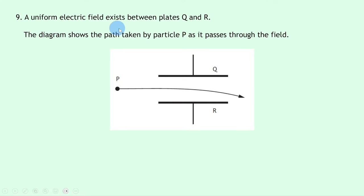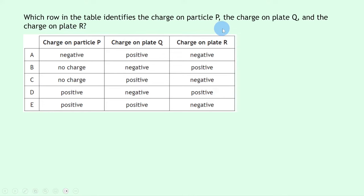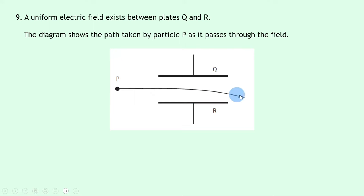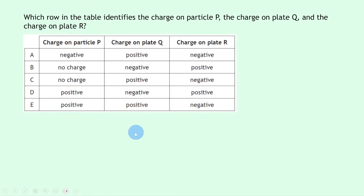Question 9 says a uniform electric field exists between plates Q and R. Particle P bends towards plate R and away from plate Q. Since P is attracted to R, they have opposite charges; since P is repelled from Q, they have the same charge. The only option where P and Q share the same charge and P and R are opposite is option E.